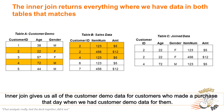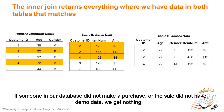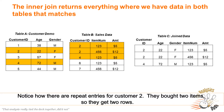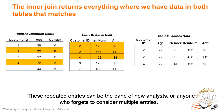Inner join gives us all of the demographic info on customers who made a purchase that day when we had demographic info for them. If someone in our database did not purchase anything, or the sale did not have demographic info, we get nothing. Notice how there are repeat entries for customer two — they bought two items, so they will get two rows. These repeated rows can be the bane of new analysts, or people who forgot to consider multiple entries.